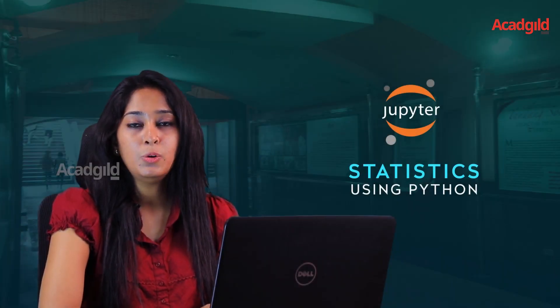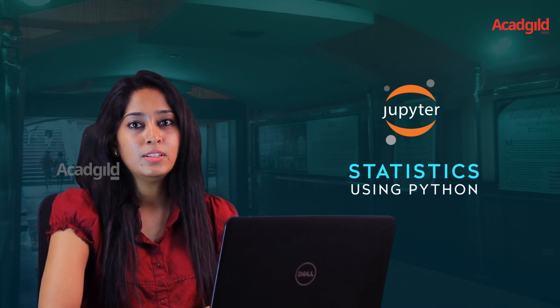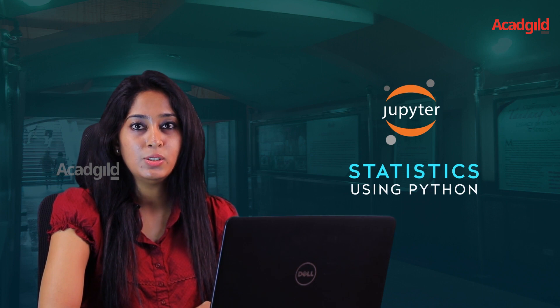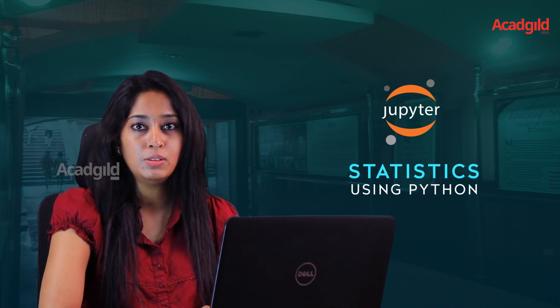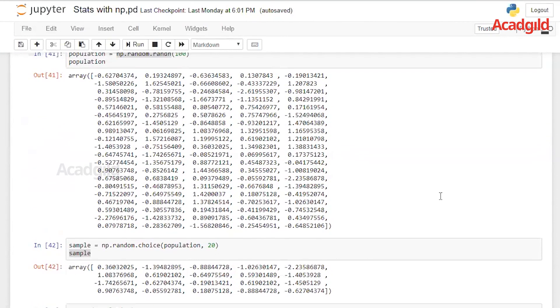Variance tells us how far the data is away from the mean, and it changes for population and sample. In population, we consider the whole number of population observations. But in sample, we subtract the number of sample observations by one. So let's take an example in our Jupyter notebook.